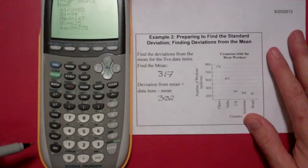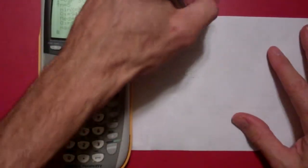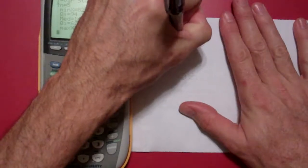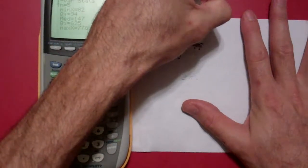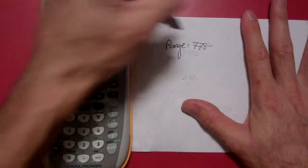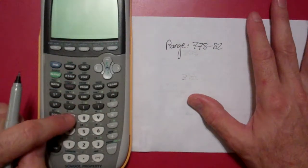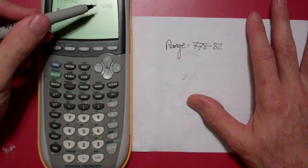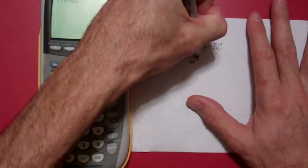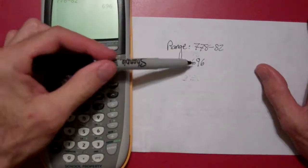So if I actually wanted to find the range of values, I would take the 778 and subtract from it the 82. And so of course the second quit takes you to the home screen. 778 minus 82 gives you 696. So quite a bit of range, almost 700.